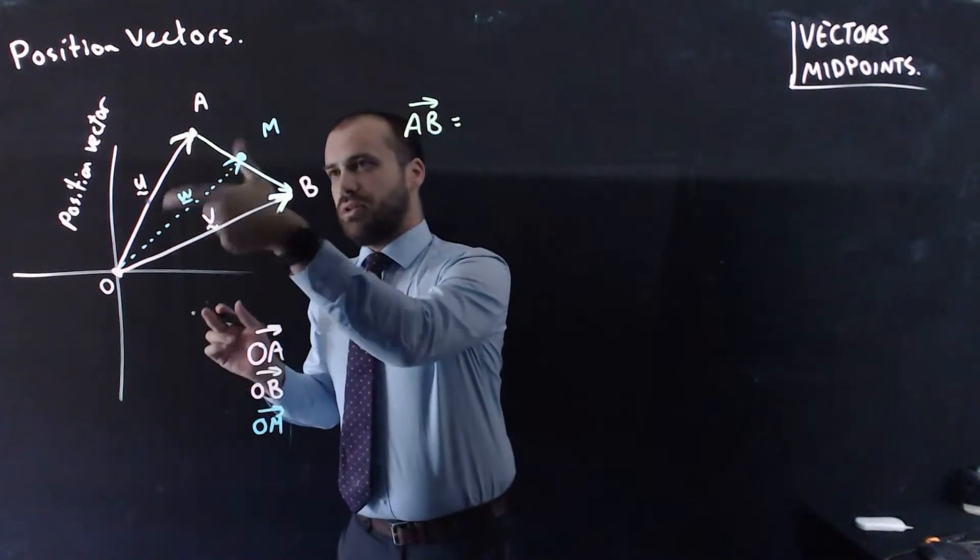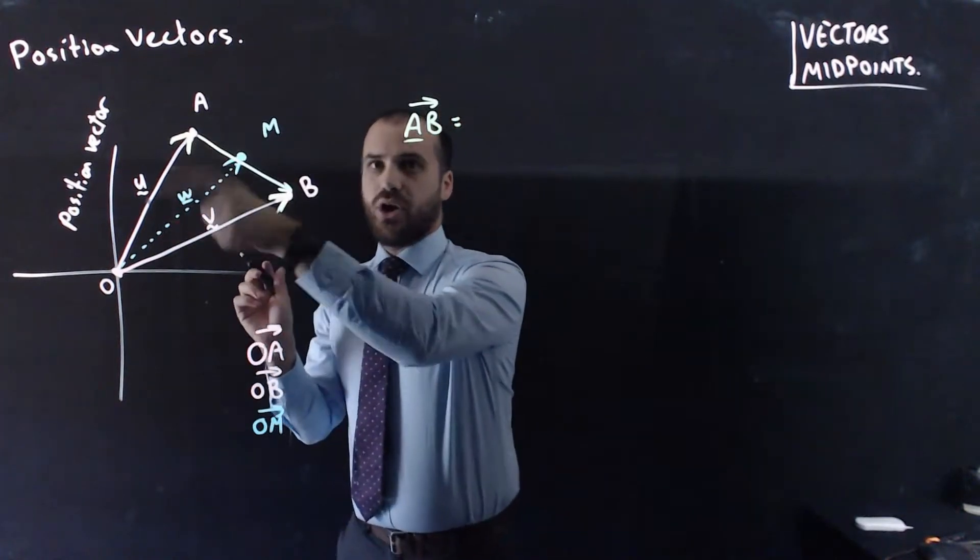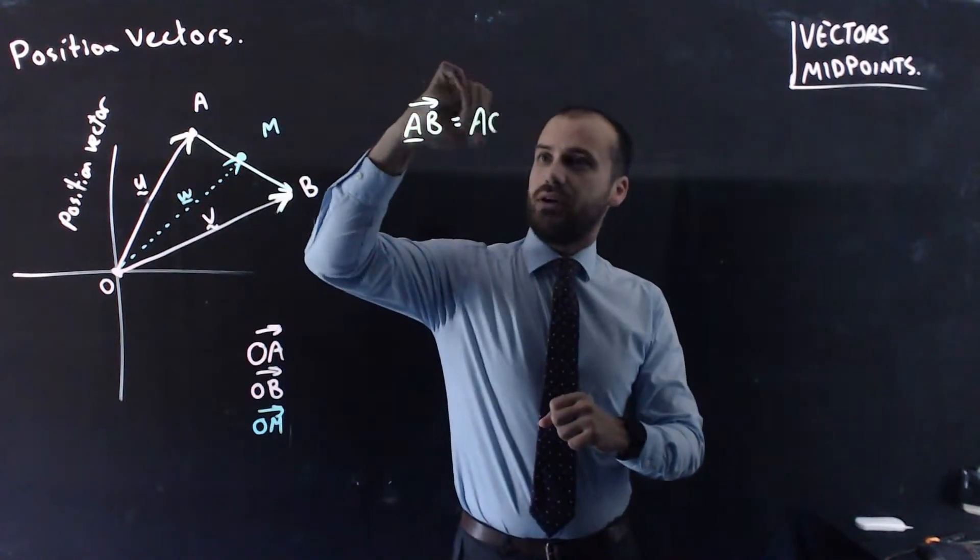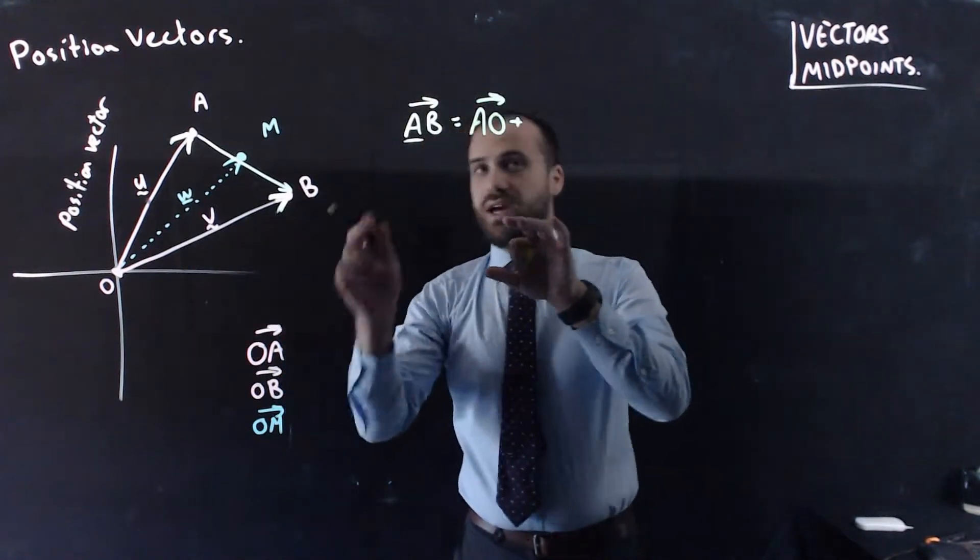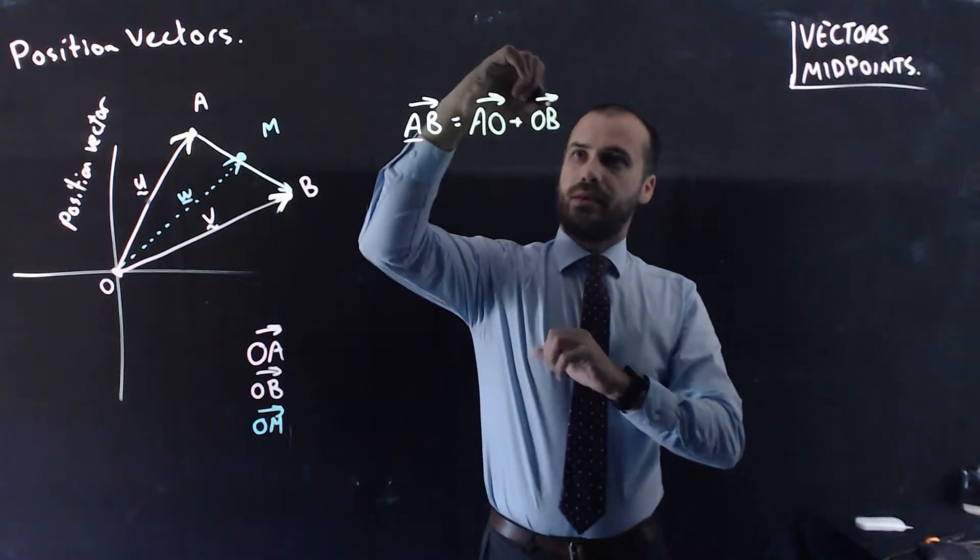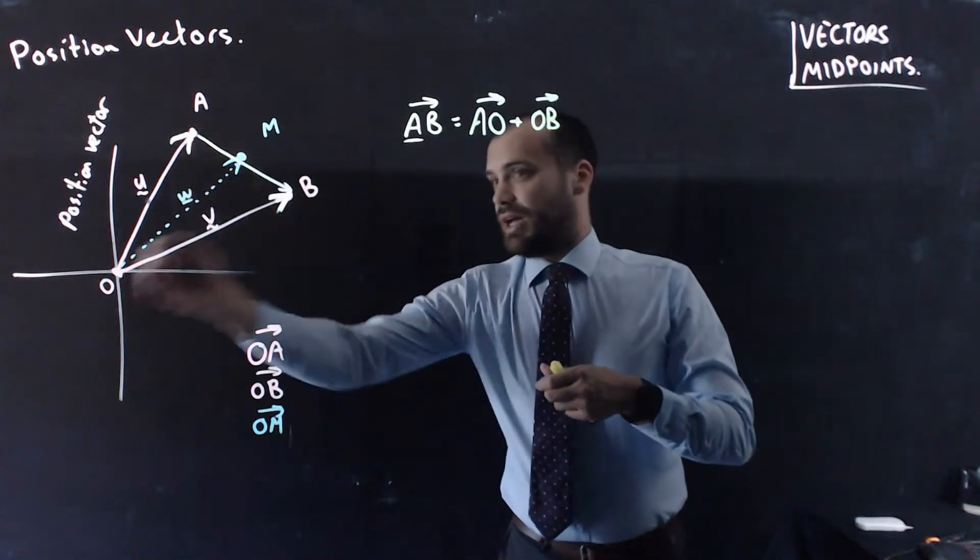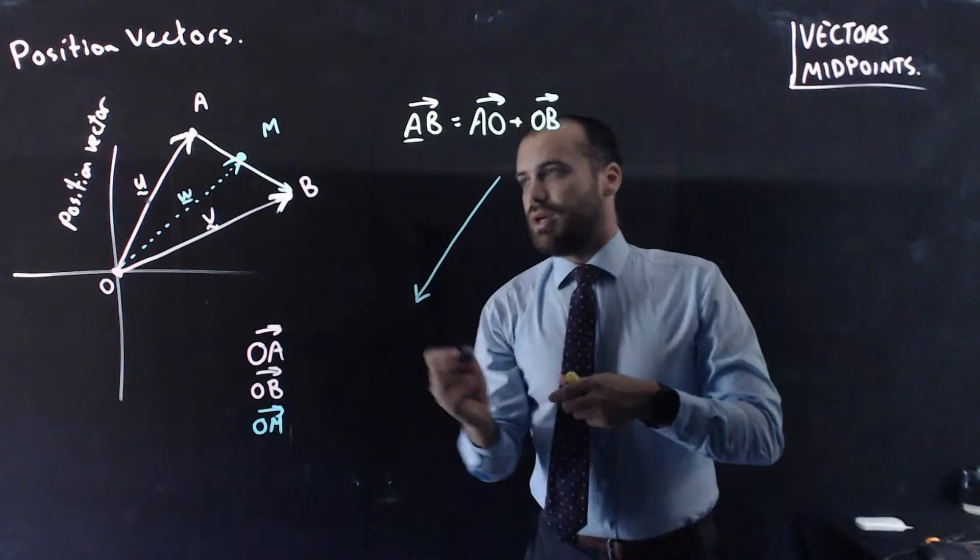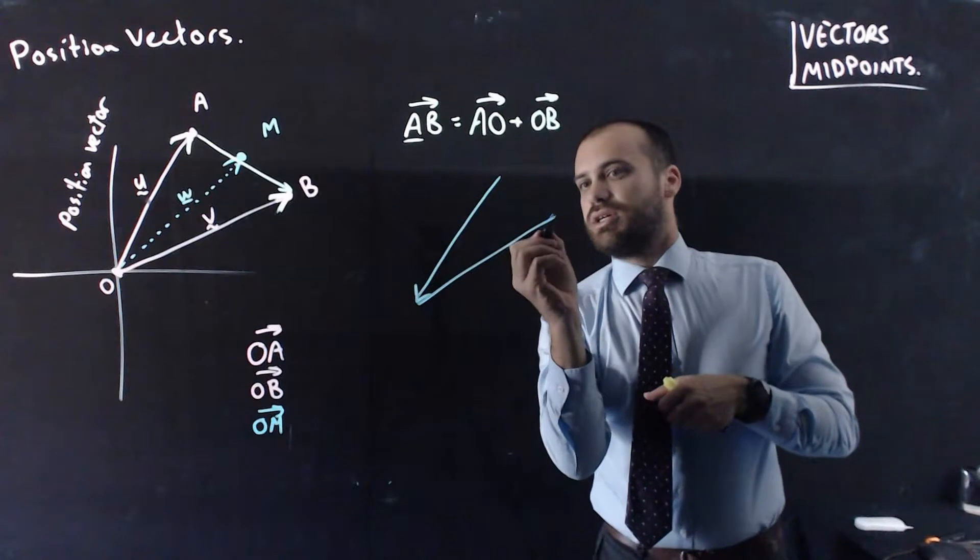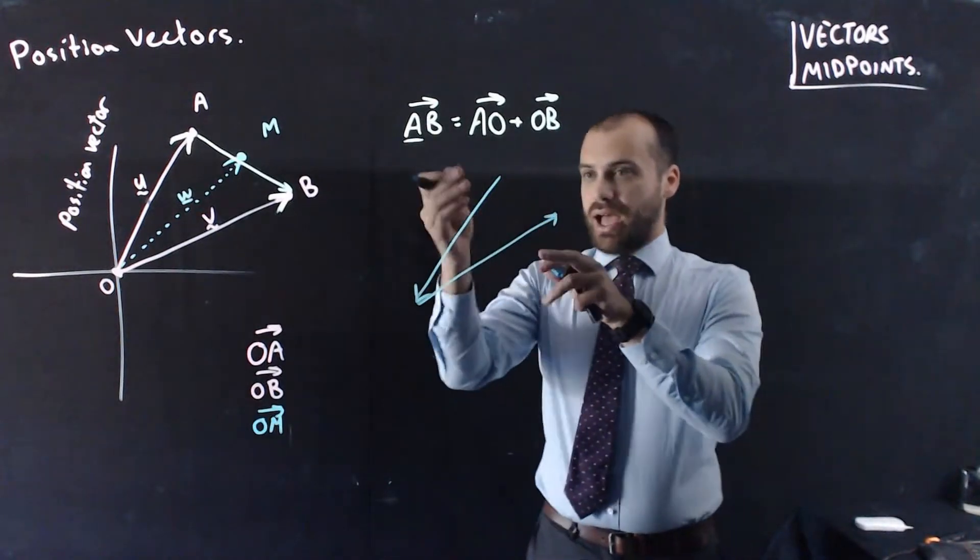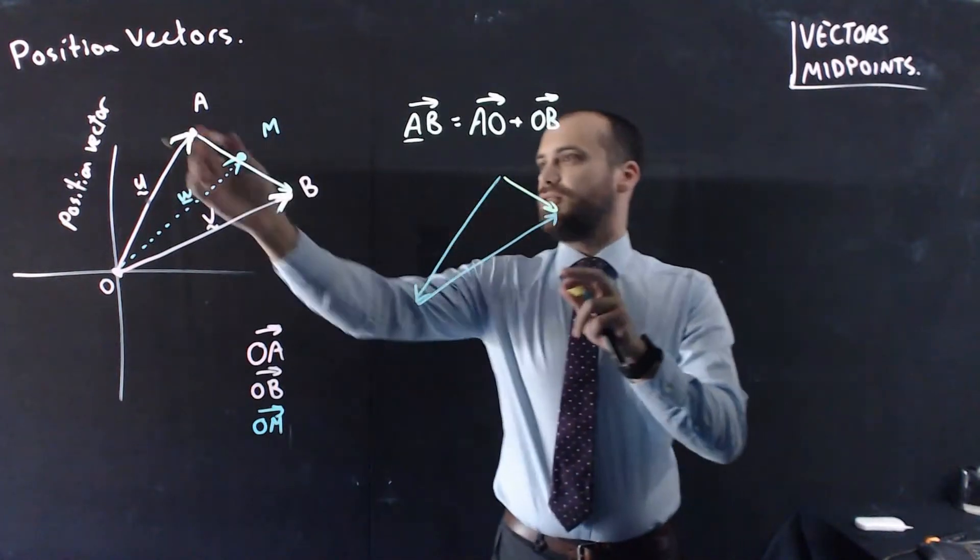I have to flip the first vector. So, if I'm trying to find vector AB, I have to flip OA, which becomes AO. And then I just add in that vector as it currently is, OB. Just to see what that looks like graphically, AO is moving in that direction. And then if I add OB to it, I get this picture here. And if I add those two vectors together, I get this thing, which is what I'm looking for, AB.